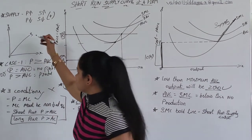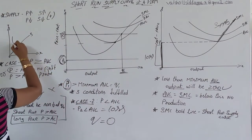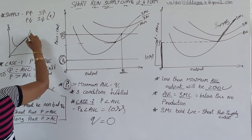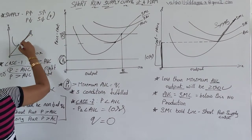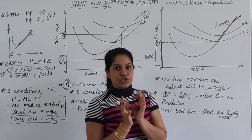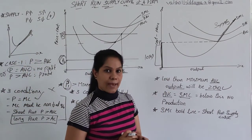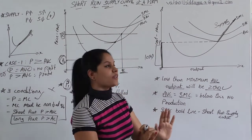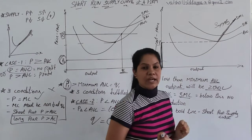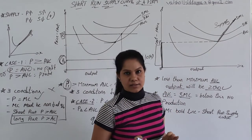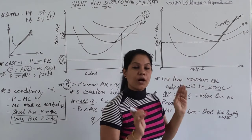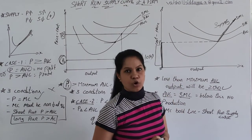You can see the supply curve follows the same shape as the SMC curve — they both move together. That is why the bold line after the intersection point is not only the short-run marginal cost, but at the same time it is also a part of the supply curve.